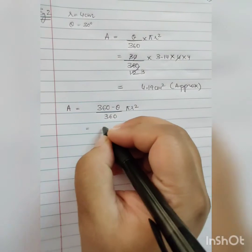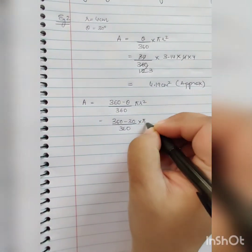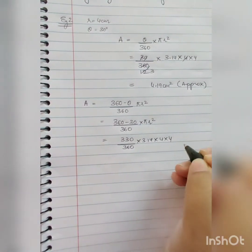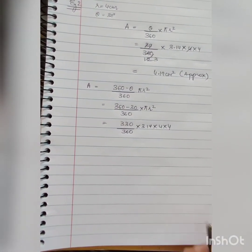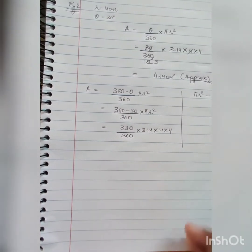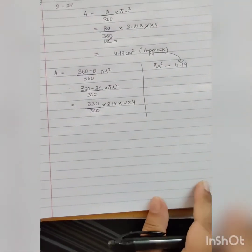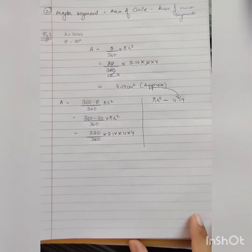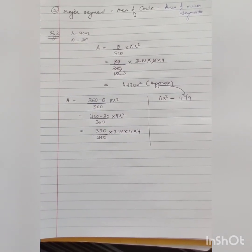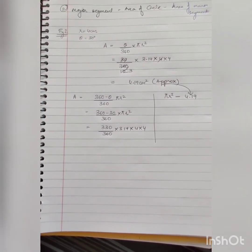For the corresponding major sector of the same circle: Area = (360 − 30)/360 × πr² = 330/360 × 3.14 × 4 × 4. Alternatively, use Area of circle − Area of minor sector. Both methods give the same answer. Use whichever is convenient.